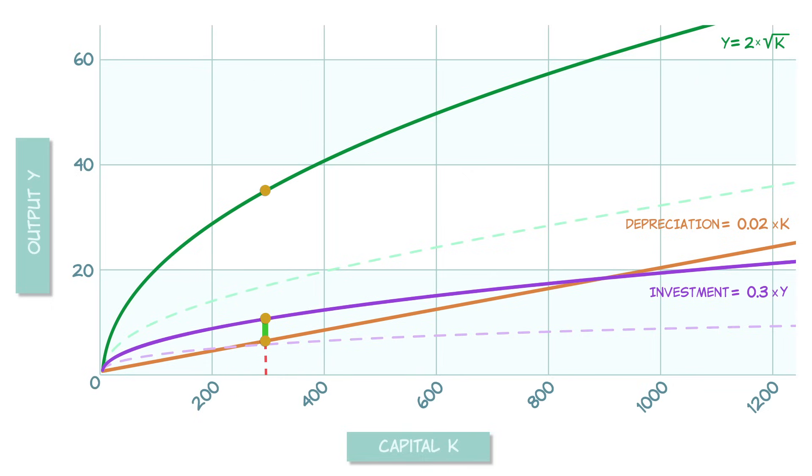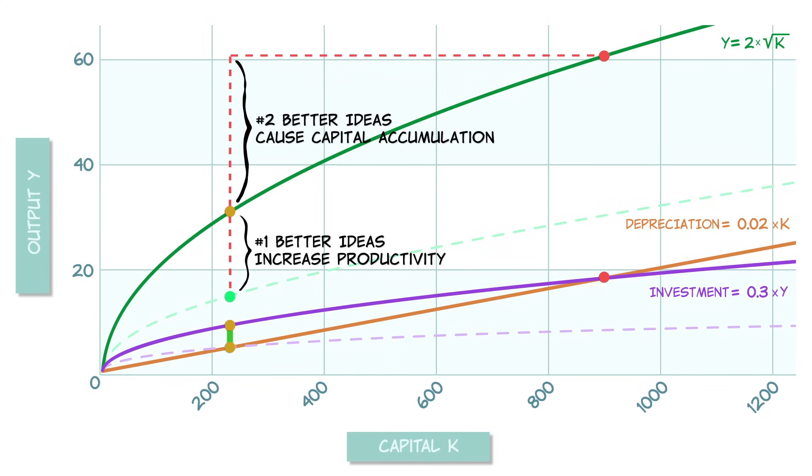So better ideas spur more output, which creates more investment, which leads to capital accumulation. So better ideas lead to growth in two ways, the increased productivity of a given capital stock, and the increased investment, which increases capital accumulation.